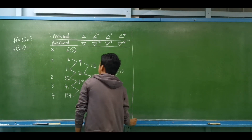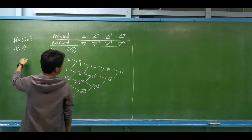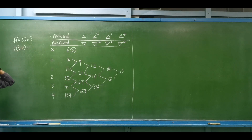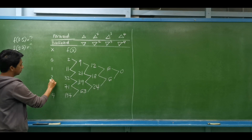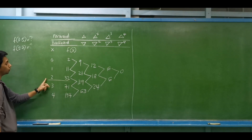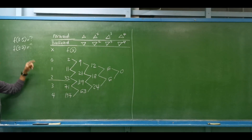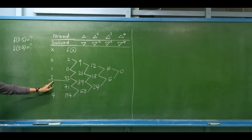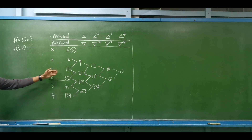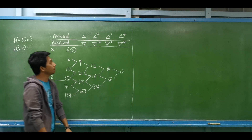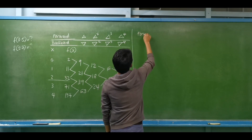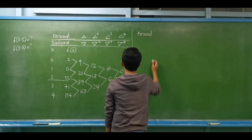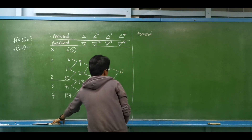We are now to determine f(0.5) and f(2.7). For f(0.5), our x value is before the middle of our data, so therefore we may use the forward Newton-Gregory method.